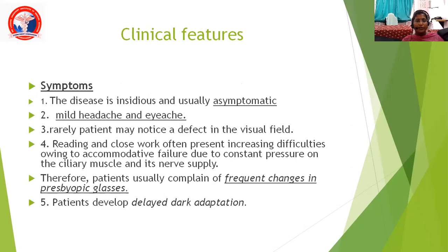Coming to the clinical features and symptoms: the disease is usually insidious and asymptomatic. It can have mild headache and eye ache, but rarely the patient may notice a defect in the visual field. Reading and close work often present increasing difficulties owing to accommodative failure due to constant pressure on the ciliary muscle and its nerve supply. Therefore, the patient usually complains of frequent change in presbyopic glasses, and patients also develop delayed dark adaptation.